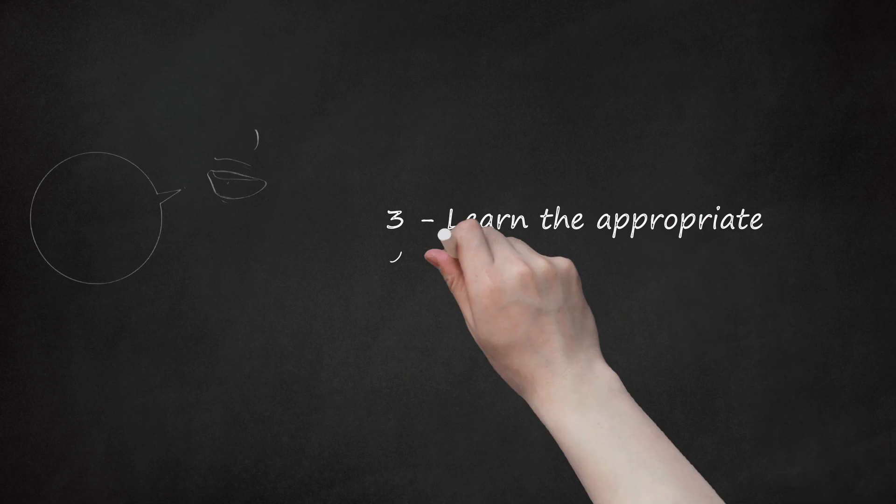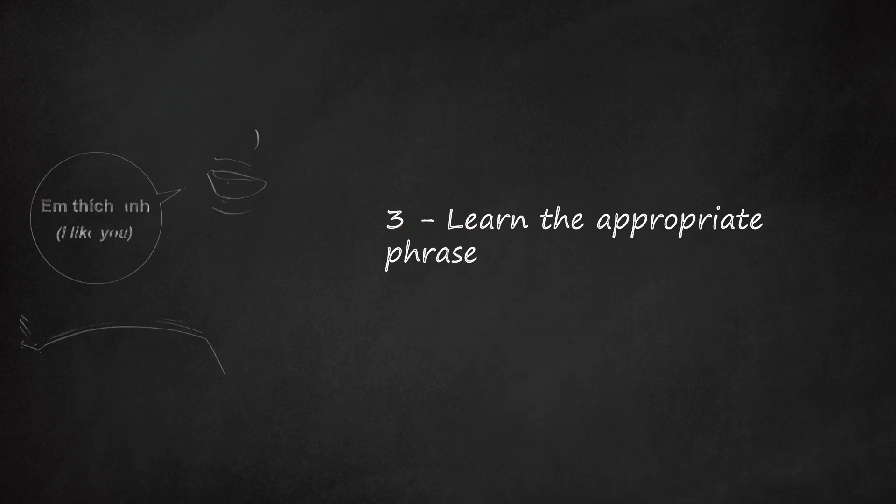3. Learn the appropriate phrase. If you don't want to say I love you, there are other less intense phrases. Try I like you instead. To say I like you, you would say 'Em thích anh' if you're a girl talking to a boy. If you're a boy talking to a girl, you would say 'Anh thích em'.